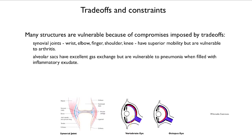In all of these issues, there are strong involvements of trade-offs and constraints. Many structures are vulnerable because they've been forced to compromise. In the synovial joint — the wrist, elbow, finger, shoulder, and knee — such joints have superior mobility; you can twist your wrist and rotate your fingers because these are synovial joints. However, they are all vulnerable to arthritis. Here is a diagram of the synovial joint between two finger bones, containing a synovial cavity that gives extra buffering and flexibility as a fluid-filled cavity. Similarly, the alveolar sacs in the lung have excellent gas exchange, but they are vulnerable to pneumonia because they fill up with exudate if inflamed. So trade-offs are involved in the design of structures — if you make them good for one thing, they may be vulnerable to another.